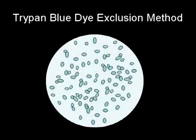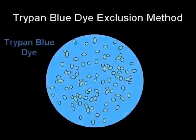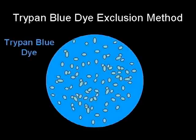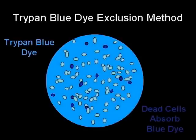The Trypan Blue dye process involves first submersing the cells in the Trypan Blue dye. When cells die, their membranes become permeable, which allows for the uptake of the Trypan Blue dye. As a result, the dead or non-viable cells become darker than the viable cells, and it is this contrast that is measured to determine viability.